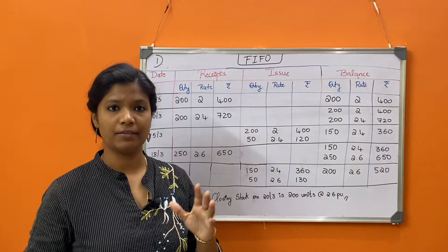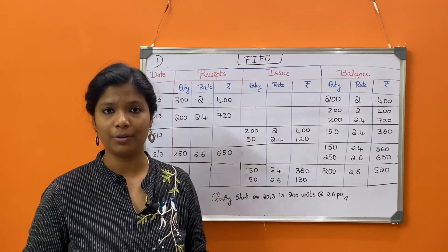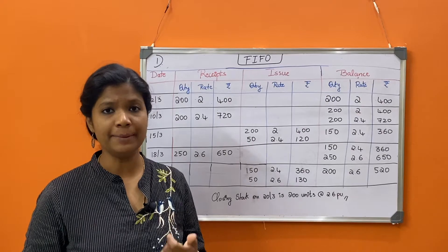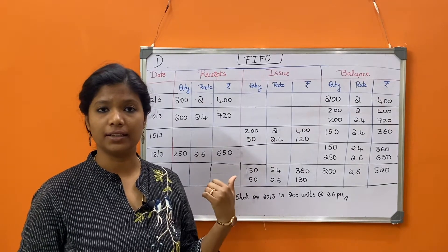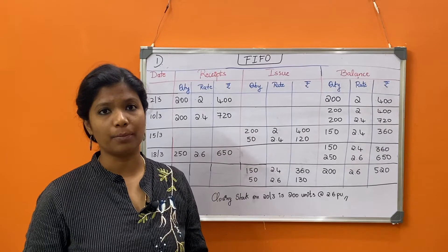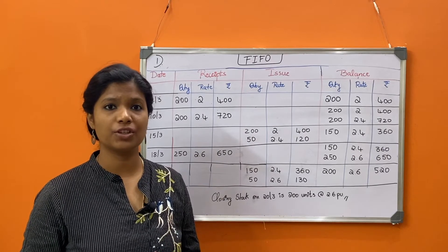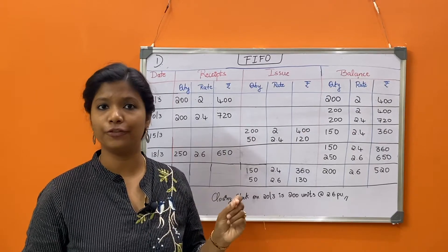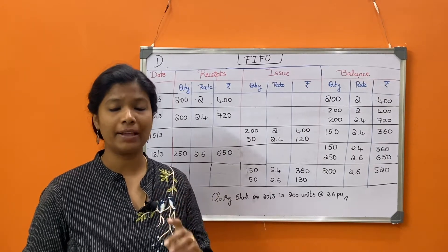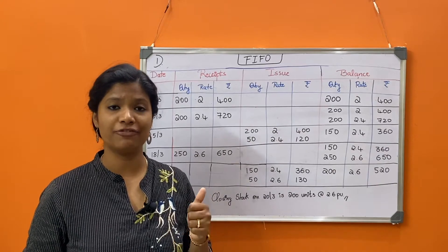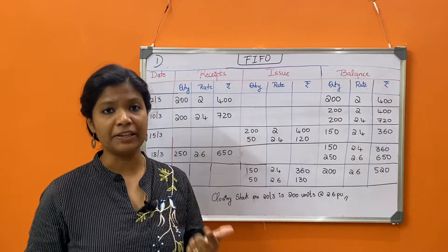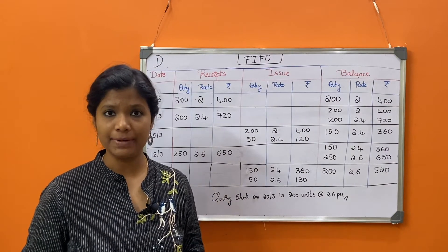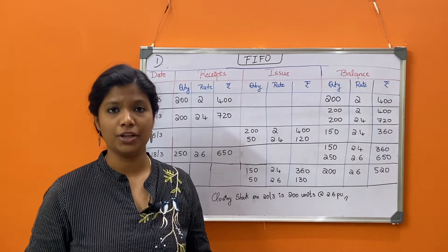We have completed the five-marker problem on material cost control under the topics of economic order quantity and stock levels. Now let's look into the next topic — Section C problems — which comes under valuation or pricing of issue of materials. We have four methods: FIFO (first in first out), LIFO (last in first out), simple average, and weighted average.